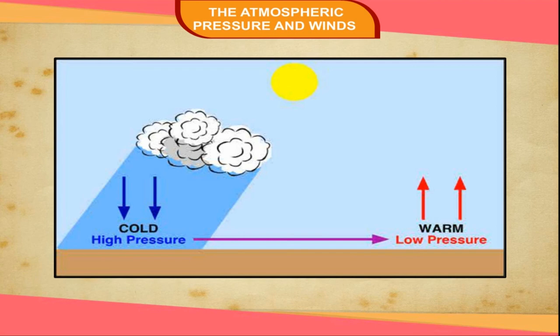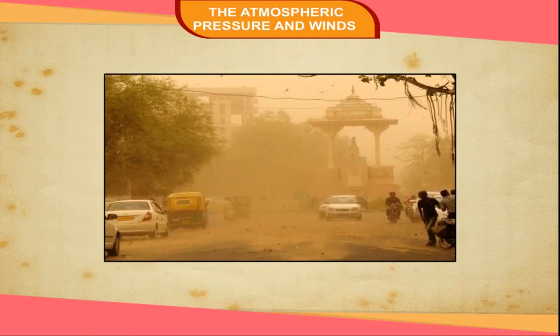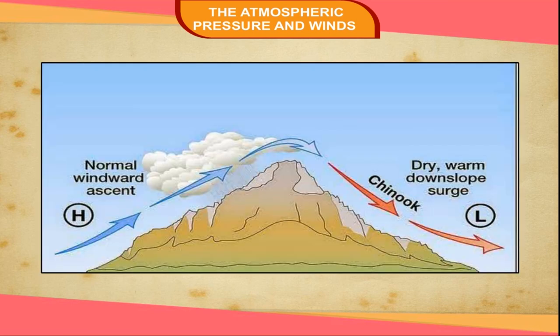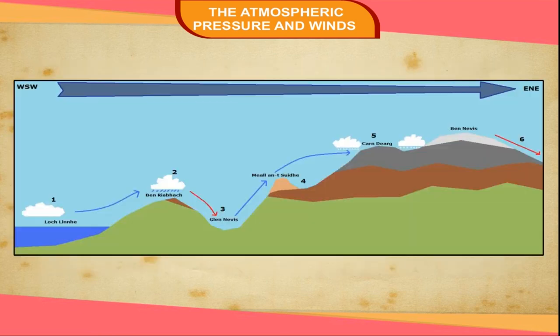Local Winds: Some winds with special characteristics blow over limited areas and have local significance. They have different names in different parts of the world. Loo is a hot and dry wind which blows over the plains of North India during summers. Chinook is a warm and dry wind which blows over the eastern side of the Rocky Mountains in North America. It is also known as the snow eater. Foehn is similar to Chinook; it blows down the southern flanks of the Alps during winters and helps in the ripening of grapes in southern Europe.